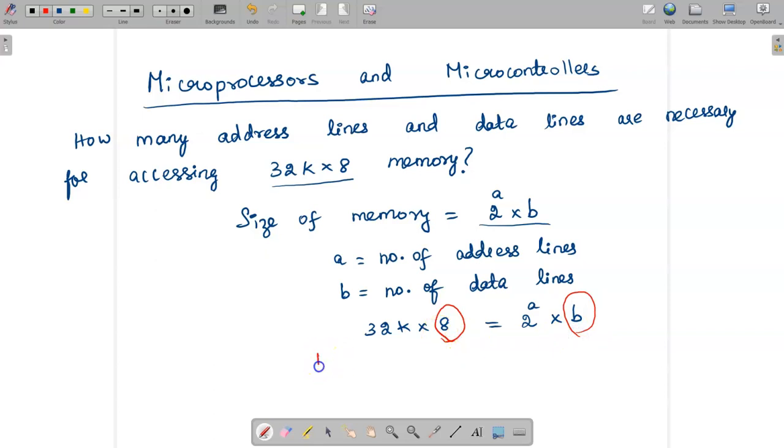The b value, the number of data lines in this question, is 8. We can denote the data lines as d0 to d7. If they ask only the number of data lines, you can write 8. To specify what are all the data lines, we start with data line 0, so d0 to d7.